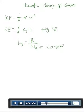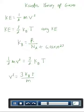Since these both equal kinetic energy, I can set them equal to each other. And I'm going to solve for v squared. This is the average velocity squared.